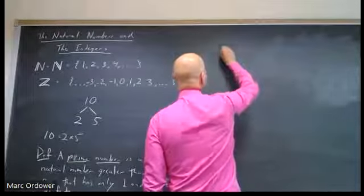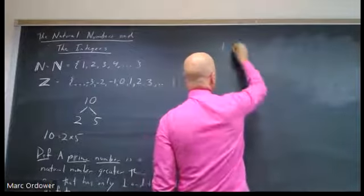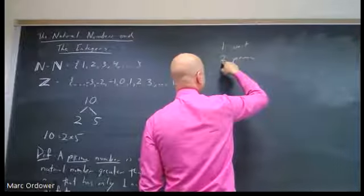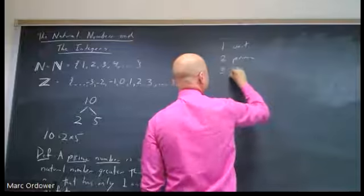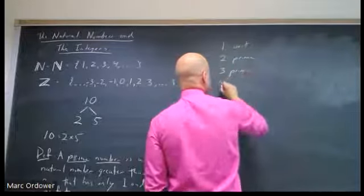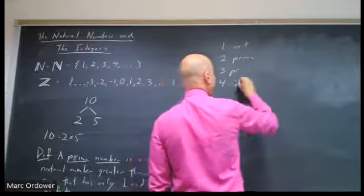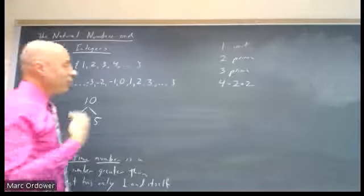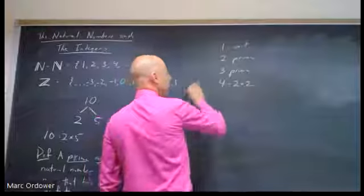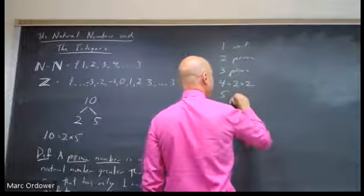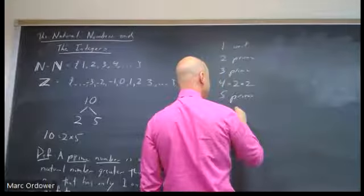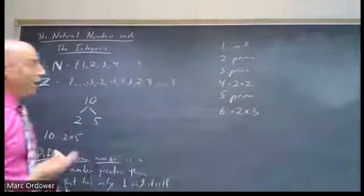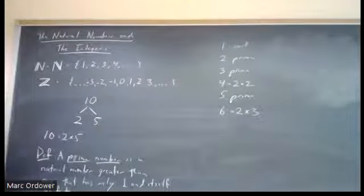So if we start going through the numbers, one, as I said, is not prime. It's what's called a unit. Two is prime. Can't factor that anymore than it is, other than two times one. Three is prime. Four is not prime because four is two times two. A number that's not prime is called, depending on where you grew up, either composite or composite, depending on how you pronounce that word. Both are fine. Five is prime. Six is not prime because six is two times three or three times two. So we have several composite numbers, several prime numbers, and one is its own thing.